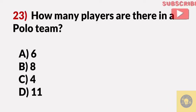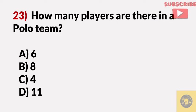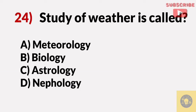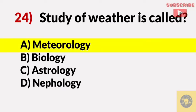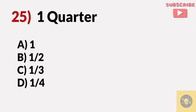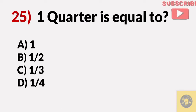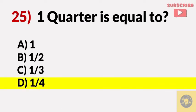How many players are there in an Apollo team? Answer C, four. The study of water is called — Answer A, meteorology. A quarter is equal to? Answer D, one by four.